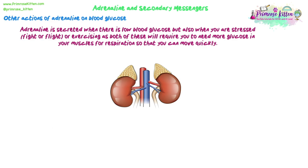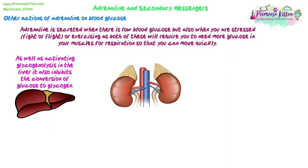There are some other actions of adrenaline relevant to blood glucose concentration. Adrenaline is secreted when there are low blood glucose levels, but also when you're stressed — in fight-or-flight mode or when exercising — as both situations require more glucose in your muscles for respiration so you can move quickly. It triggers glycogenolysis in liver cells as we've discussed, but it also inhibits the conversion of glucose to glycogen in the liver, so you're not converting glucose back to glycogen until blood glucose levels have returned to where you want them.